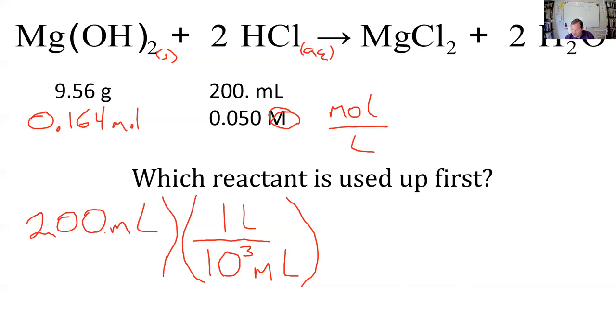Then the question just means we just have to use our concentration as our next conversion. If we had a whole liter, it would be 0.050 moles. So we wind up 200 divided by 1,000 times 0.05.